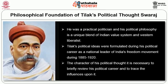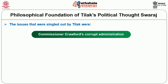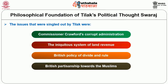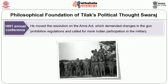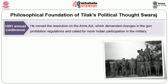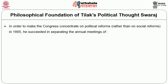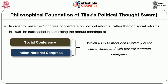To understand the character of his political thought, it is necessary to briefly review his political career. The issues singled out by Tilak were Commissioner Crawford's corrupt administration, the iniquitous system of land revenue, the British policy of divide and rule, and British partisanship towards Muslims. During the 1890s, Tilak participated actively in annual conferences of the Indian National Congress. In the 1891 annual Congress, he moved the resolution on the Arms Act, which demanded changes in gun prohibition regulations and called for more Indian participation in the military. His first significant political move was to relegate the issue of social reform to the background in favour of political reform, for which he led agitations against the British rulers. In 1895, he succeeded in separating the annual meetings of Social Conference and the Indian National Congress, which used to meet consecutively at the same venue.